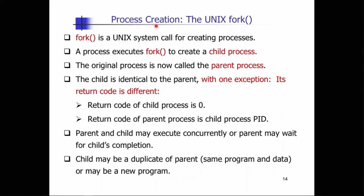Let's look at process creation in Unix using the system call fork. Why do we need to create new processes? This could be done to increase CPU utilization. If we have space in memory to create more processes, we can do that using fork, which is a Unix system call for creating processes. A process executes fork to create a child process, giving us the concept of parent and child. The original process is called the parent process, and the spawned clone is called the child process.